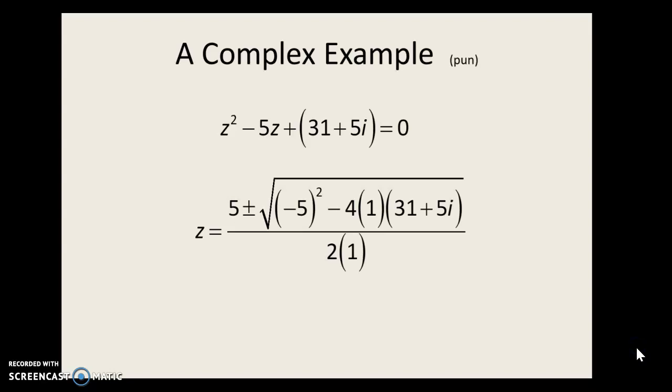But we still want to use the quadratic formula. The quadratic formula works for all coefficients. They don't have to be real. So here's -b ± √(b² - 4ac) / 2a. We can simplify everything inside the radical here. And when we do that, we get -99 - 20i. So let's think a moment. This is a complex number in rectangular form. But we want to take the square root of it. So we need to convert it to cis form if we want to take a root.